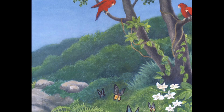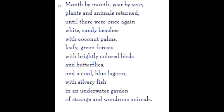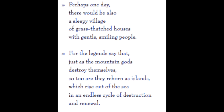Check out the illustration — doesn't it remind you of one we saw previously in the text? 'Month by month, year by year, plants and animals returned until there were once again white sandy beaches with coconut palms, leafy green forests with brightly colored birds and butterflies, and a cool blue lagoon with silvery fish in an underwater garden of strange and wondrous animals. Perhaps one day there would also be a sleepy village of grass-thatched houses with gentle smiling people. For the legends say that, just as the mountain gods destroy themselves, so too are they reborn as islands, which rise out of the sea in an endless cycle of destruction and renewal.'